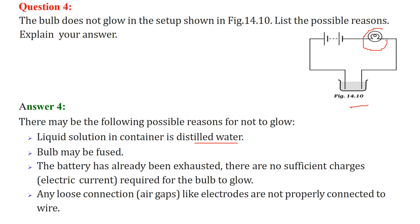The bulb may be fused. The battery has already been exhausted, so it has no sufficient charges or electric current required for the bulb to glow. And there may be loose connections also, like air gaps, or electrodes not properly connected to the wire.